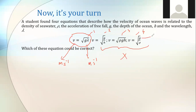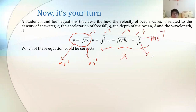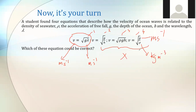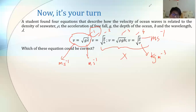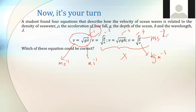G is m·s⁻², right? So the unit works out for the first equation. This is homogeneity — so the first equation is the homogeneous one, meaning it could possibly be physically valid, while the other three are not.